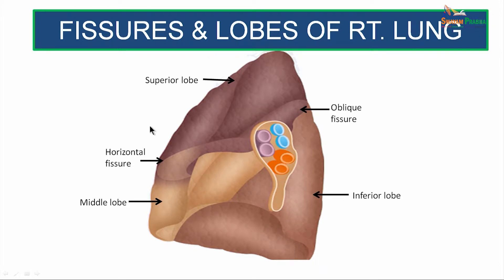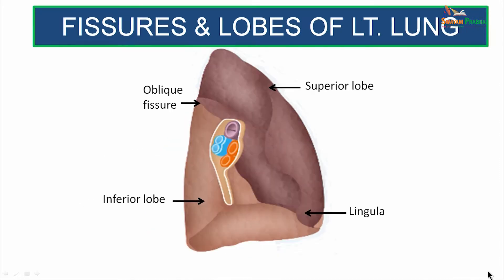Apart from the oblique fissure, the right lung also has a horizontal fissure which starts from the oblique fissure at the mid-axillary line at the 5th costal cartilage, proceeds forward to cut at the 6th costal cartilage, thereby dividing the superior lobe into a superior lobe and a middle lobe. The left lung has a single oblique fissure, which is more vertical than that of the right lung, dividing it into a superior and an inferior lobe.